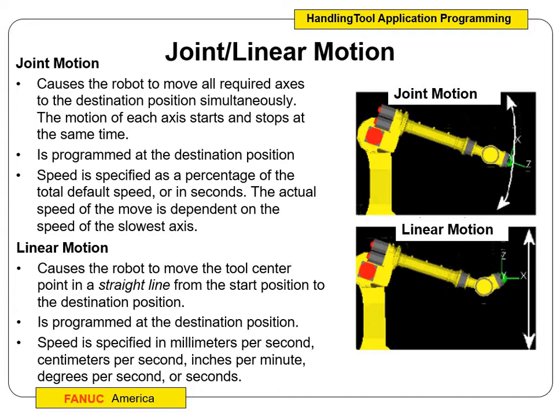When we have joint versus linear motion — a joint motion is the fastest way for the robot to get to that point. Some of you experienced that when you did your box program or your user frame, and sometimes your tool dipped down into the plane. A linear motion is a straight line to and from the point, so we can see the difference between linear and joint motion.